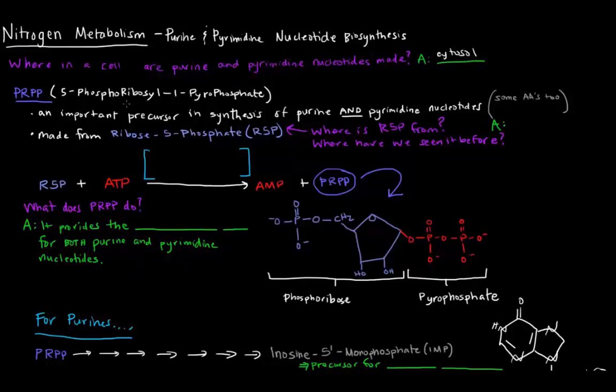One important molecule involved in the synthesis of purines and pyrimidine nucleotides is PRPP, which is short for 5-phosphoribosyl-1-pyrophosphate. What is PRPP? It's an important precursor in the synthesis of those nucleotides, and it's also important in the synthesis of some amino acids as well, but we're not going to focus on that in this video.